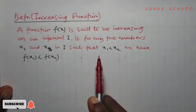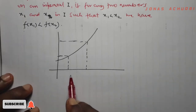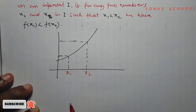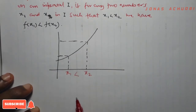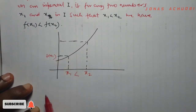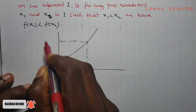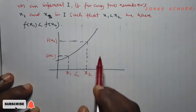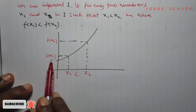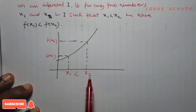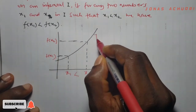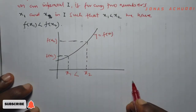Let's illustrate this graphically and see what it means. There are two points: the first point is x1 and the second point is x2, such that x1 is less than x2. The functional value of x1 is f of x1 and the functional value of x2 is f of x2. From this setup it is obvious that the value of f of x2 is greater than the value of f of x1, even though x1 is less than x2. So for such a function, y equal to f of x is an increasing function.